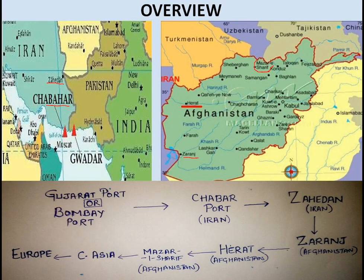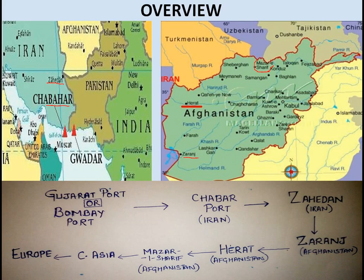Let's have a look at the map showing where Chabahar port is and where India's ports are, and how you get the connectivity. You can see in the first photograph here in Gujarat we go to Kandla port. Here in Mumbai we have Jawaharlal Nehru Trust port. From here we take the ship and we reach Chabahar port. After this you can see we go to Zahedan.